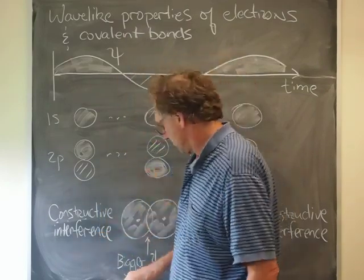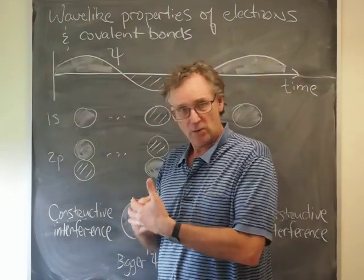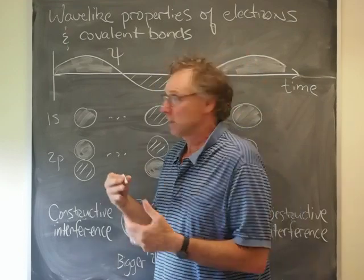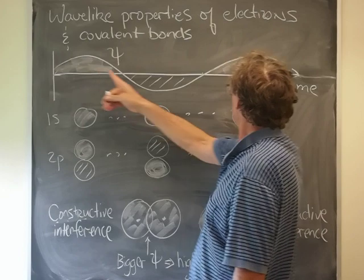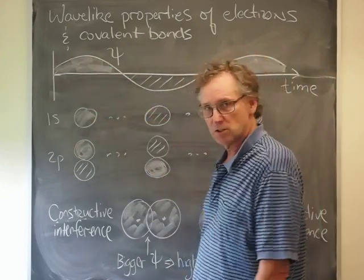So the first idea here is that electrons have wave-like properties. And like any waves, if you want to think of a water wave, water waves over time have a high part of the water wave and a low part and so on.